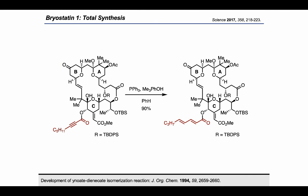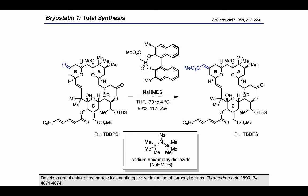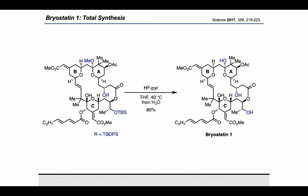Using a ynoate-to-dienoate conversion developed by Rychnovsky, the authors used the alkynoic acid to reveal the desired diene motif. Using a chiral phosphonate developed by Fuji — originally for enantiotopic discrimination of carbonyls — the authors were able to install a ynoate with the desired Z-alkene geometry. Finally, a global deprotection with HF-pyridine resulted in the completion of the total synthesis of Bryostatin-1.